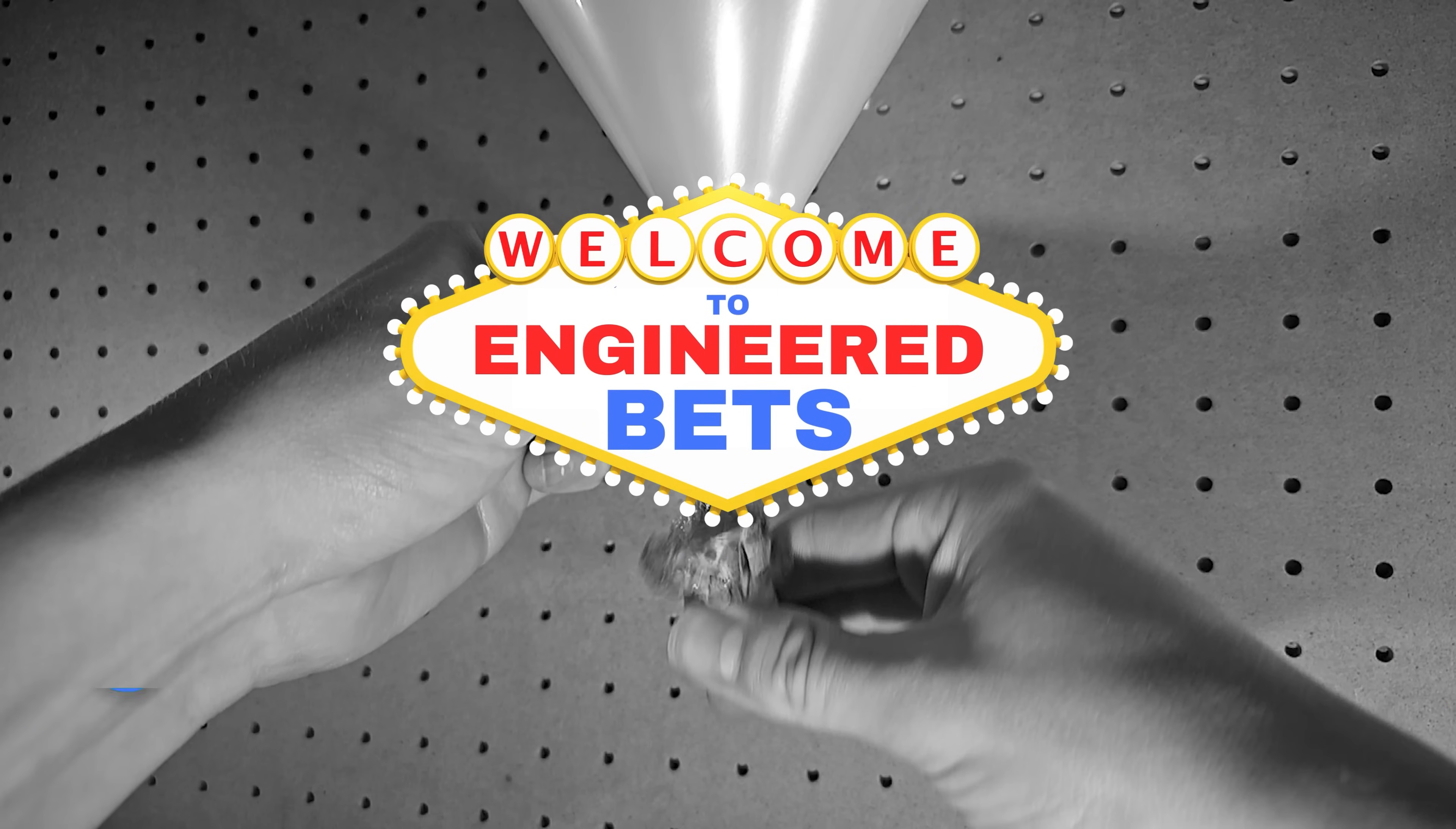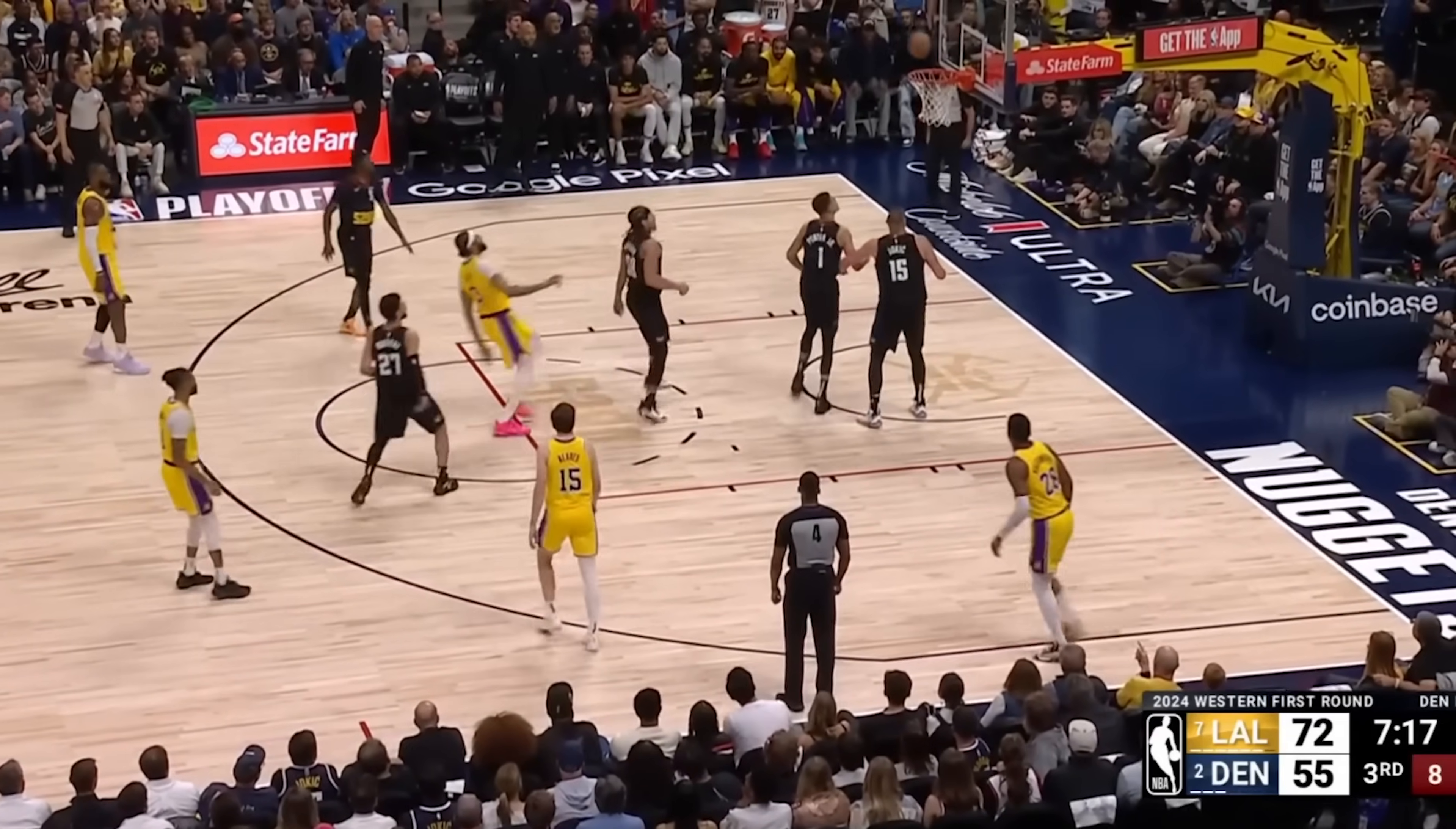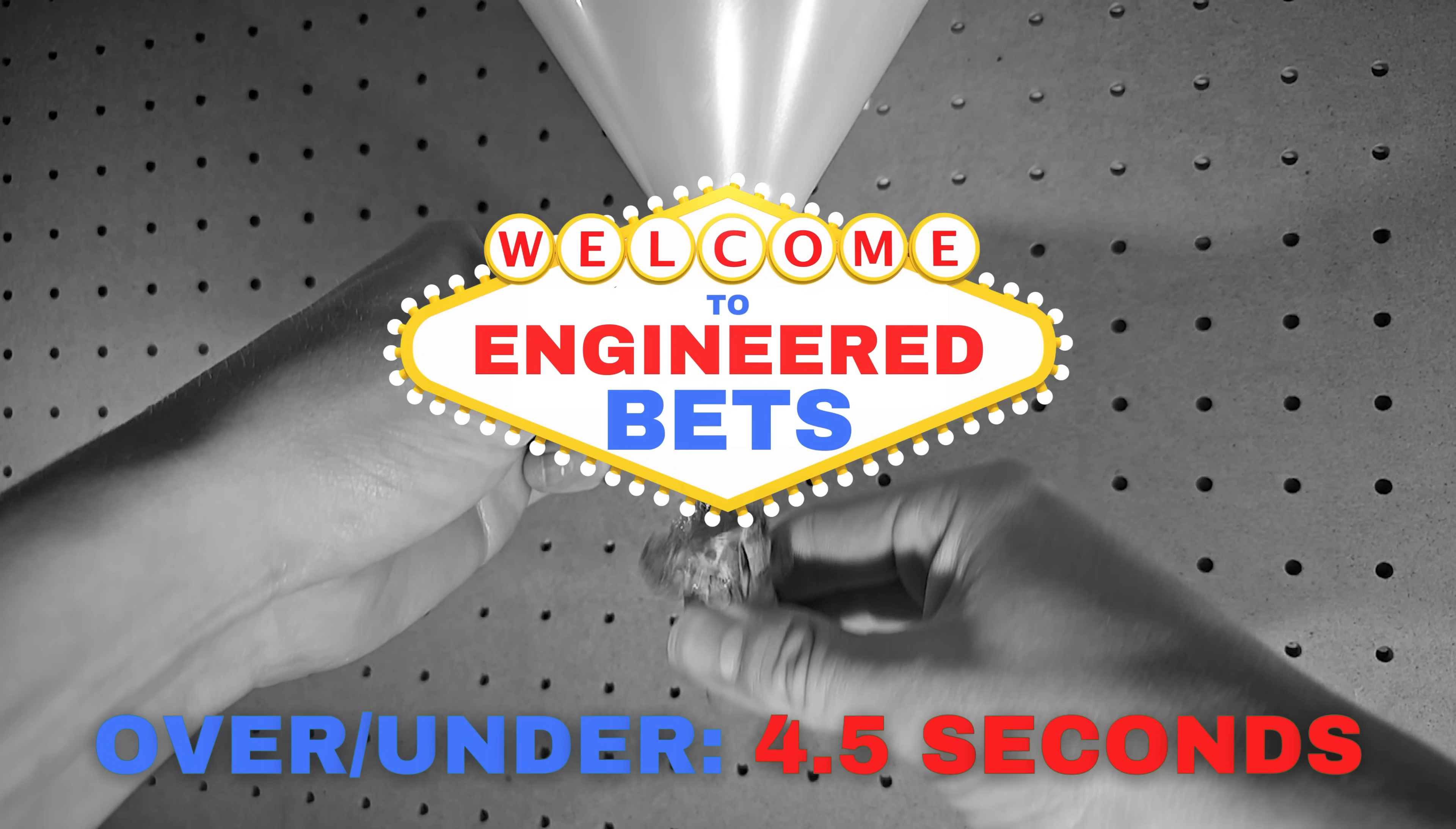Welcome back to Engineered Bets. Today's line is 4.5 seconds, which is about as long as it takes for the Lakers to blow a lead, and it's your job to take the over or the under.